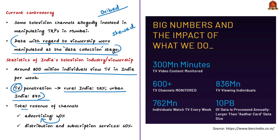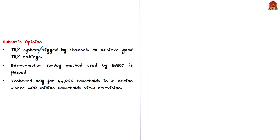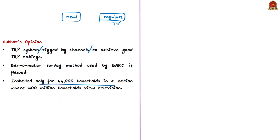The author says the TRP system has been rigged using unscrupulous methods. One method involves giving a new TV to a selected household and asking them to run a particular channel throughout the day, while on their normal set they can watch whatever they wish. The author also says the method used by BARK is flawed because barometers measure only 44,000 households in a nation where 20 crore households view television and 80 crore individuals watch TV in a week.